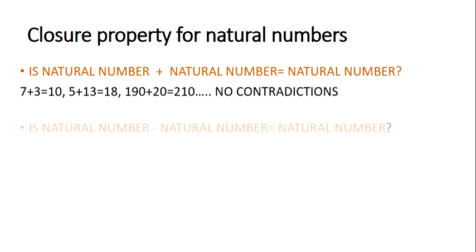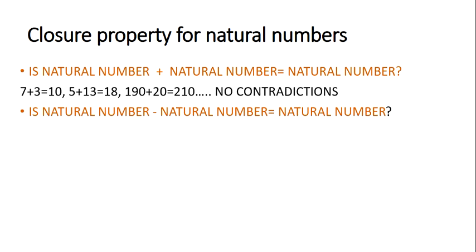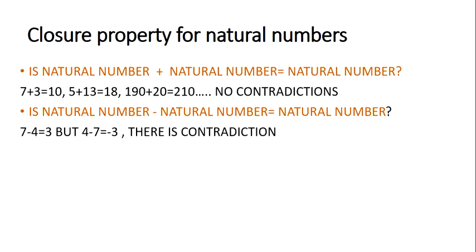Now let us talk about subtraction. The key question is: does a natural number minus a natural number give a natural number? Let us see some examples. 7 minus 4 gives 3, which is a natural number. But 4 minus 7 gives minus 3, which is not a natural number. So here there is a contradiction, and because of this contradiction we cannot conclude that natural numbers are closed under subtraction.